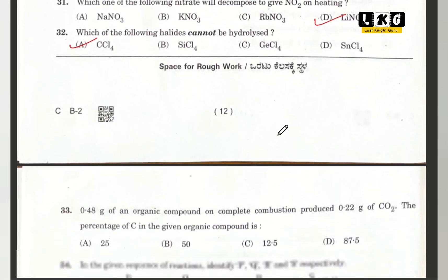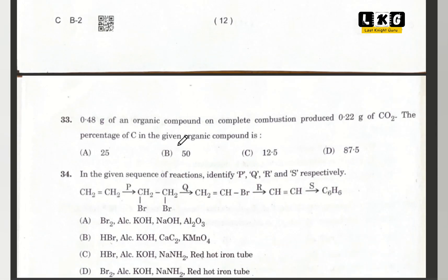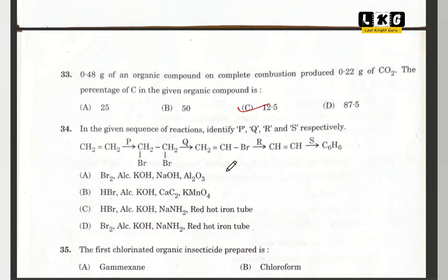Question number 33: an organic compound on complete combustion produces a given amount of CO2. The percentage of carbon in the compound — option C is correct, 12.5 grams. Question number 34: in the given sequence of reactions, identify P, Q, R and S. Option D is correct — Br2, KOH, NaNS2, red hot iron tube. This is also from the hydrocarbons chapter.